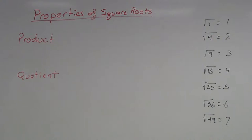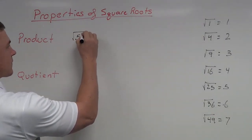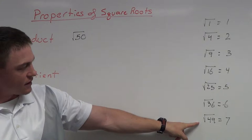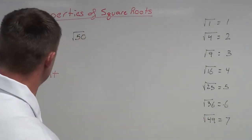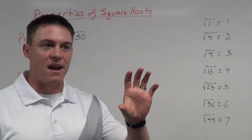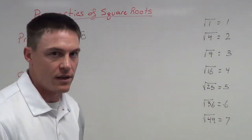So the product property — product means multiply. If I want to take a square root and reduce it, I can actually use multiplication to help me with this. So for example, if I have the square root of 50 and I look at my list over here, I don't know what the square root of 50 is. I get down to the square root of 49, which is 7, so I know it's something close to 7, but I don't know exactly what it is.